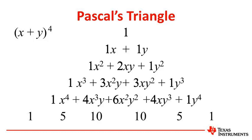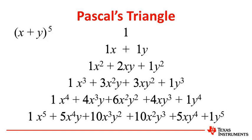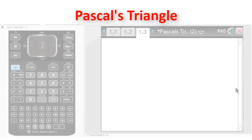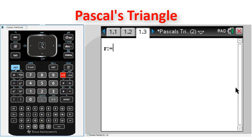It would be cool if you could use the calculator to generate an entire row of Pascal's Triangle. Well, by storing a list of numbers in a variable such as r, we can generate an entire row of Pascal's Triangle.